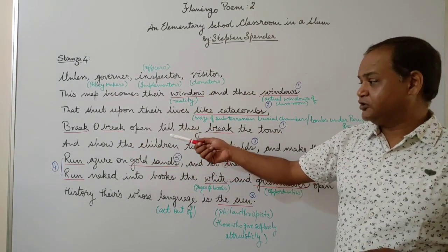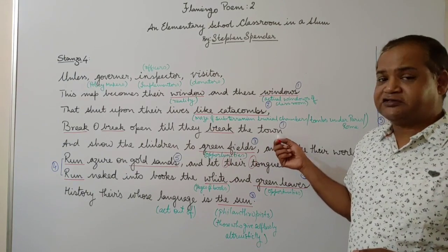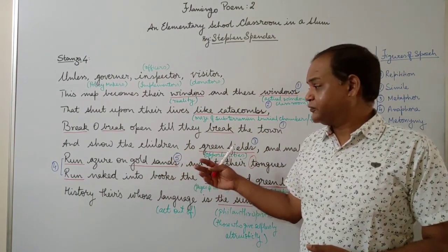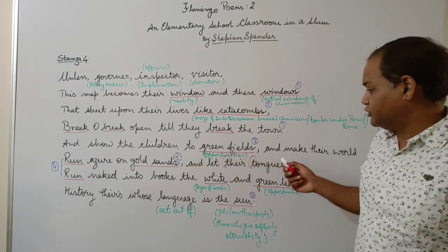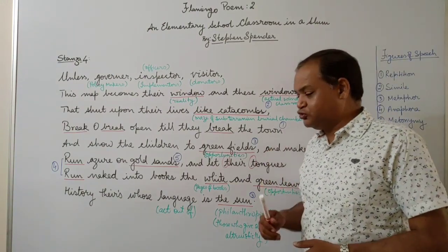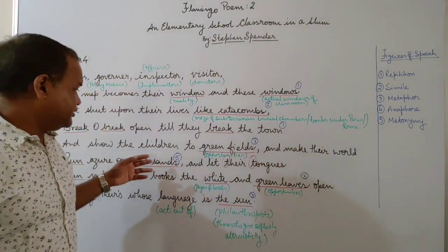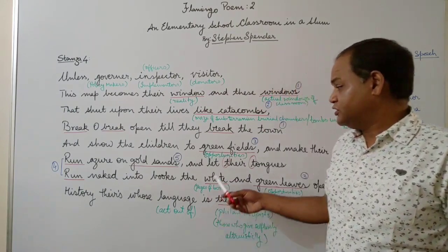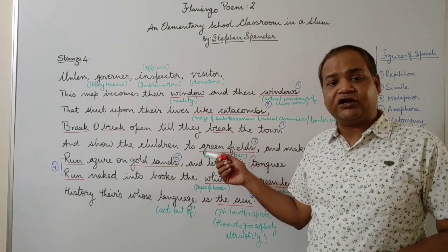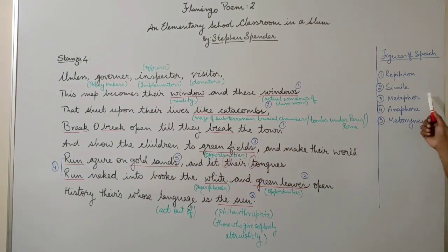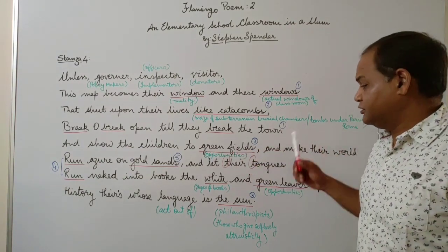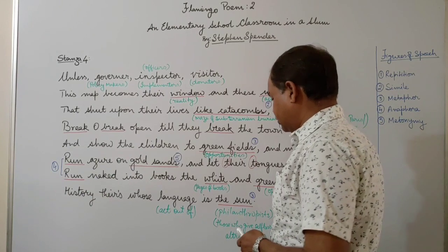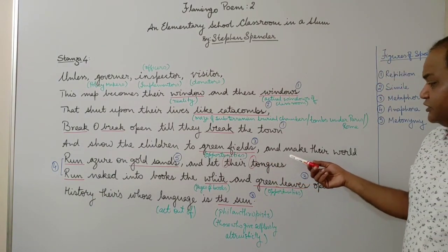So what he's trying to suggest is that unless these people come and act upon the condition and work for the benefit of the people in the slum, these people will continue to spend their sorry lives in the slum and will never be able to come out of it. That is what he's trying to convey here. And he says that these people should act in a manner that they should help these people break out of the slum. So he says 'break, or break, till they break the town'—'break the town' means reach out into the town, have access to the city life, and are able to move out of their slum. 'And show the children to the green fields and make their world run azure on gold sands.' And he's saying the solution lies in education. He says that once we decide that we need to help these people to come out of the slum, the thing that we should do is we should give the children opportunities. Green fields is a metaphor for opportunities.